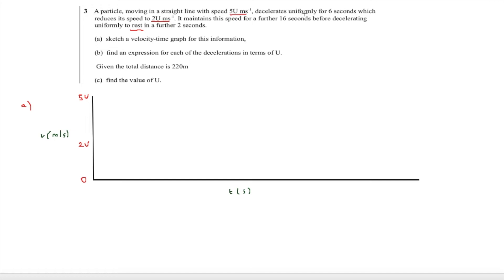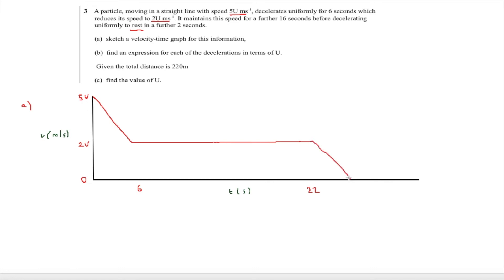It starts by decelerating uniformly for 6 seconds, drawing a line down to 6 seconds on the time axis. Then it maintains the speed of 2u for a further 16 seconds — a horizontal straight line, which does not mean stationary but constant speed — reaching 22 seconds (6 + 16). Finally it decelerates uniformly to rest in a further 2 seconds, coming to rest at 24 seconds. That is our velocity-time graph for this information.